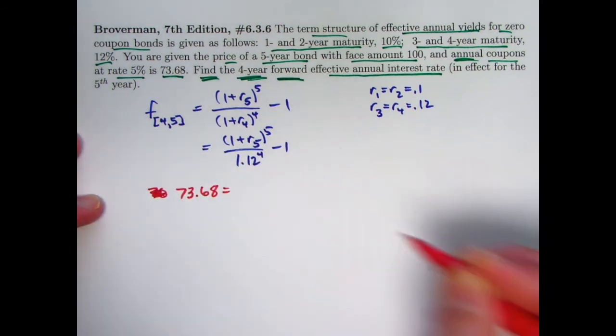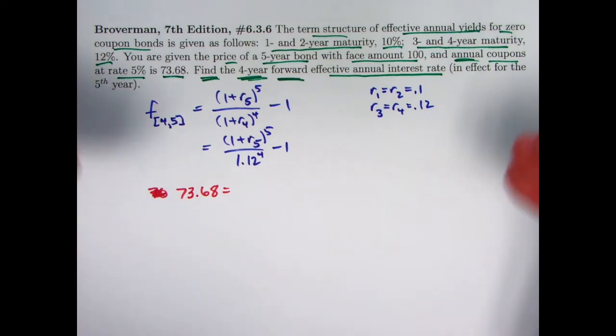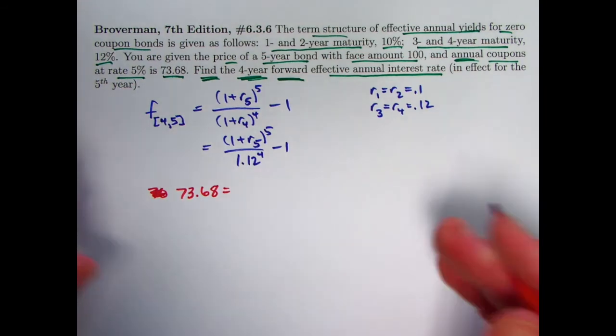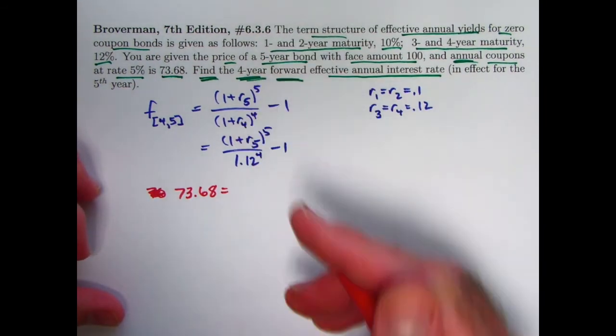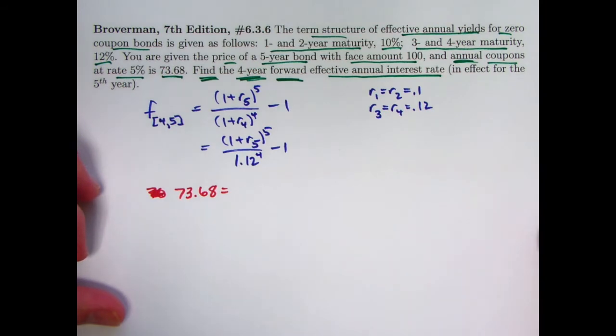73.68 is its price. And it's priced according to the term structure that we see here, these spot rates. In this case, since it's a five-year bond, it would be R1, R2, R3, R4, and R5.